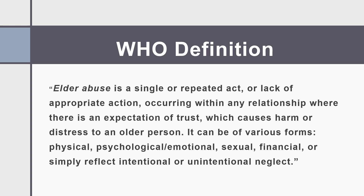Let's talk about the definition of elder abuse. Your book has a simplified definition from the World Health Organization, but I'm going to expand on that. Elder abuse is a single or repeated act, or lack of appropriate action, occurring within any relationship where there is an expectation of trust, which causes harm or distress to an older person. It can take various forms such as physical, psychological, emotional, sexual, financial, or intentional or unintentional neglect. The types of abuse are very similar to what we covered with child abuse, with the addition of financial abuse as a key component in elder abuse.